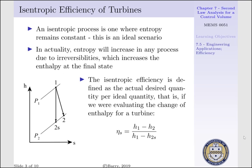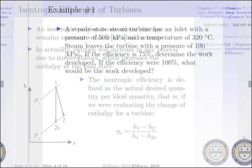our isentropic efficiency would be H1 less H2, which is our actual work, per H1 minus H2S, which is our ideal work.